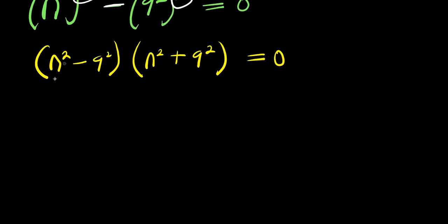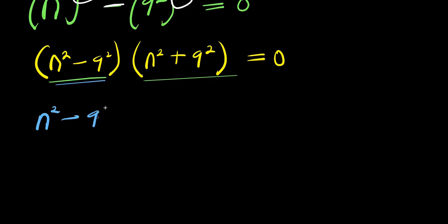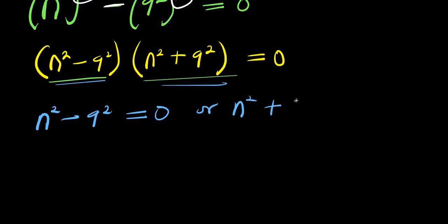The next thing we can do is equate each factor to zero. We have n power 2 minus 9 power 2 equals 0, or n power 2 plus 9 power 2 equals 0.